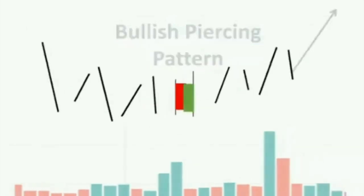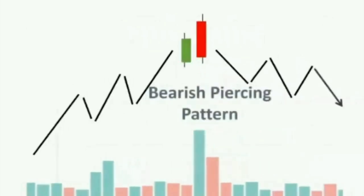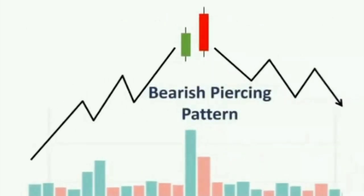The next one is the bearish piercing pattern. The piercing pattern is similar to the engulfing pattern — the only difference is the second candle is moved up. In the bearish piercing pattern, the second candle is in the same relative position. When such a pattern is formed with great volume, it indicates a strong reversal in the market, as you can see on the screen.